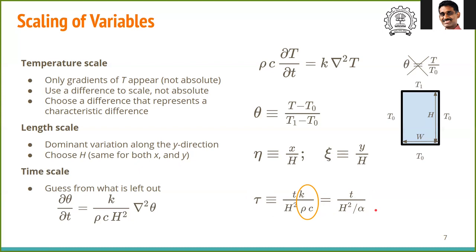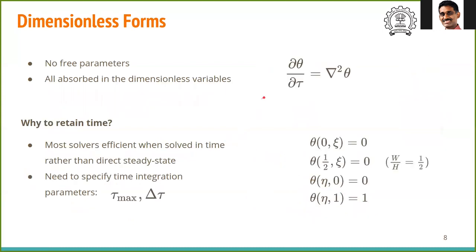In terms of the dimensionless variables, we just have ∂θ/∂τ = ∇²θ. And the boundary conditions are given by this set of expressions. There are only zeros and ones. There are no free parameters in this problem. All the physical parameters have been absorbed in the dimensionless variables.